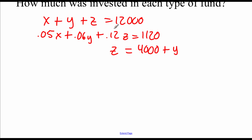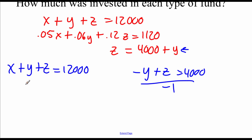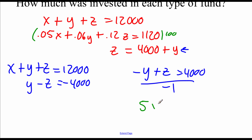For row echelon form, the first equation looks good: x plus y plus z equals 12,000. For the next equation, I'll focus on the last one. Subtracting y over gives negative y plus z equals 4,000, but we don't want a negative one in front of y, so divide everything by negative one. Our second equation says y minus z equals negative 4,000. For that last equation, I don't like dealing with all these decimals, so I'll multiply everything by 100, giving 5x plus 6y plus 12z equals 112,000.